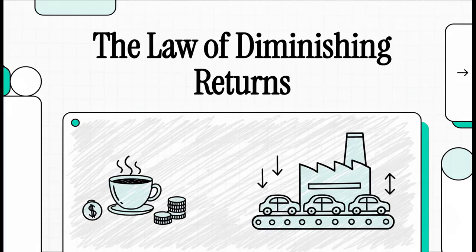Welcome to The Explainer. Today we are going to break down a huge idea in economics, something that affects pretty much every business you can think of, from the corner coffee shop to a giant car factory. It's called the law of diminishing returns, and it all boils down to one big question: When does adding more of something actually start to give you less?